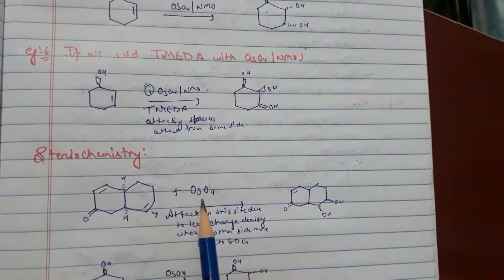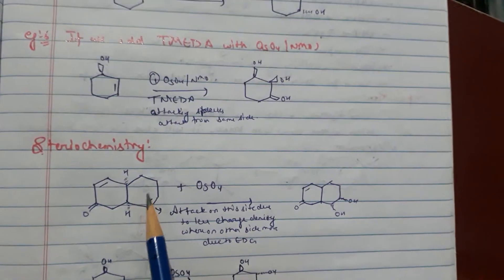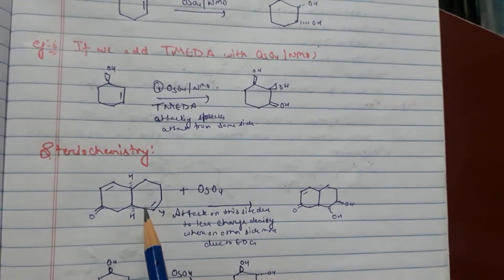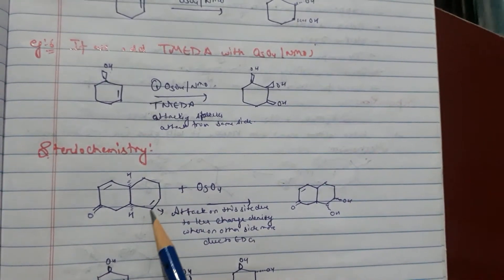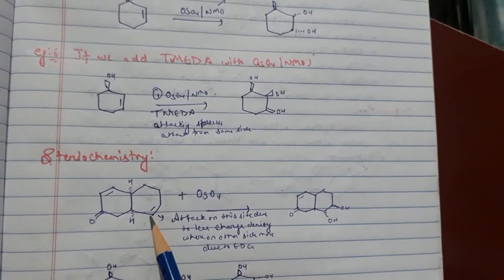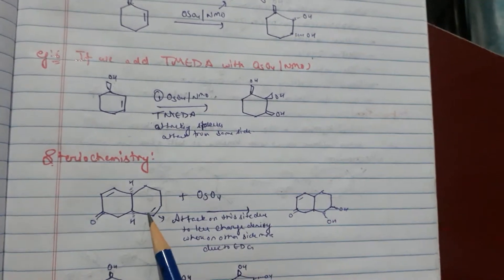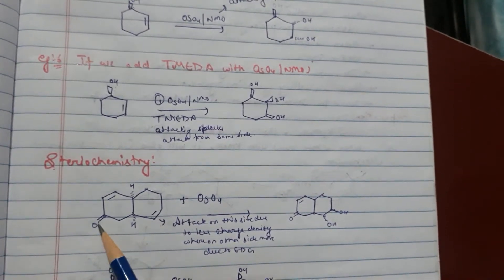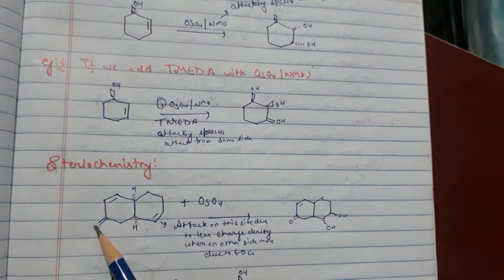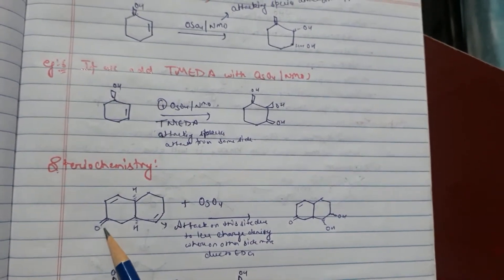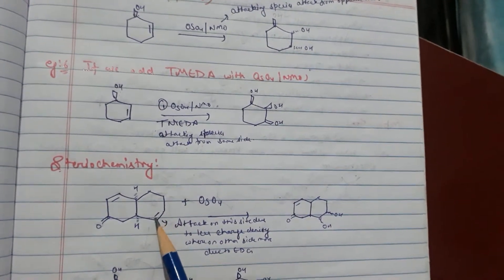Now if Osmium tetraoxide adding this reactant, it will attack on that side just because of less steric hindrance. On this side there is an electron donating group present, so it will attach on that side.